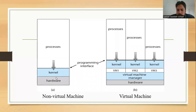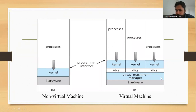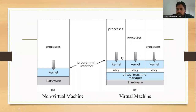This diagram shows the difference between a non-virtual and virtual machine. In a non-virtual machine, you have hardware, a kernel, and utilities. In a virtual machine, one hardware hosts a virtual machine manager, and then multiple VMs — VM1, VM2, VM3 — each with its own kernel and utilities. On the same hardware there are three virtual machines with three different kernels, and each VM can have multiple user logins, expanding the number of users exponentially.